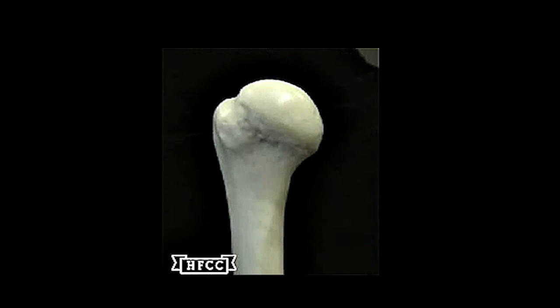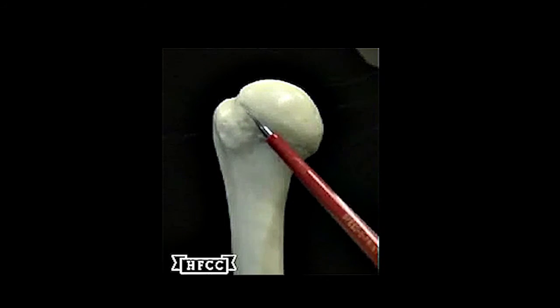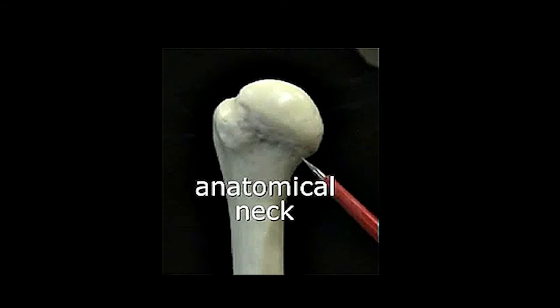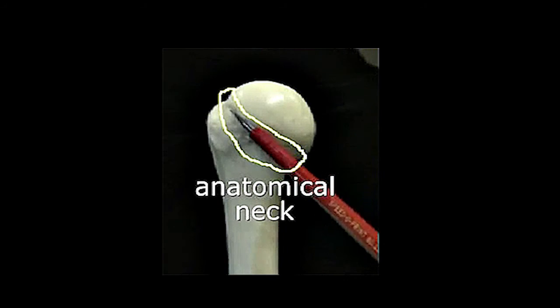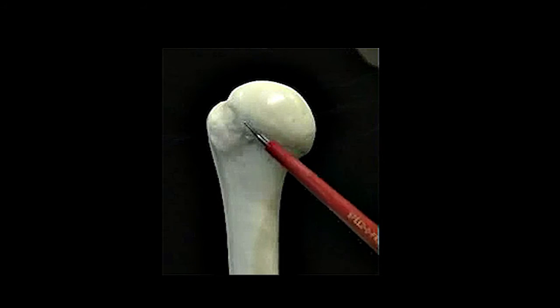And then at the base of the head, and going all the way around it, would be this anatomical neck that is viewed on both sides of the humerus, on this proximal end.